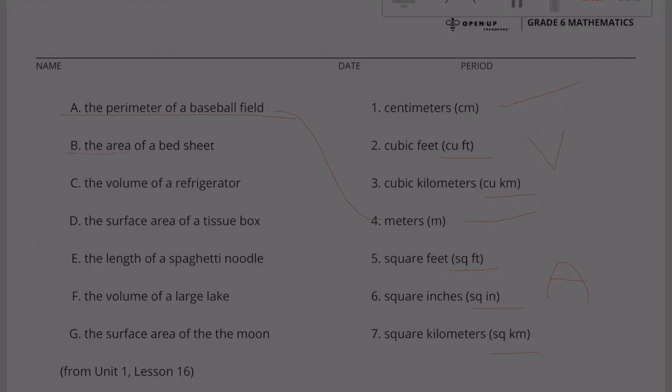Part B: The area of a bed sheet. So we're looking for an area, and a bed sheet, I'm going to go with square feet. Because later on they asked for the area of a tissue box and the surface area of the moon. Feet would be better for the bed sheet than a tissue box. I'm going to jump down here to the tissue box and connect that one to the inches. Jump down here to the moon and do the area of the moon with the kilometers.